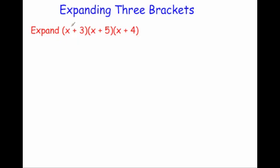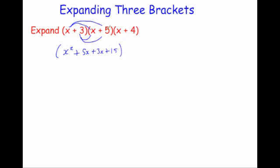We'll use FOIL and expand the first pair of brackets to begin with. So x times x is x squared, x times 5 is plus 5x, 3 times x is plus 3x, and 3 times 5 is plus 15. That's the first pair of brackets expanded, and then we're going to multiply that by the x plus 4.